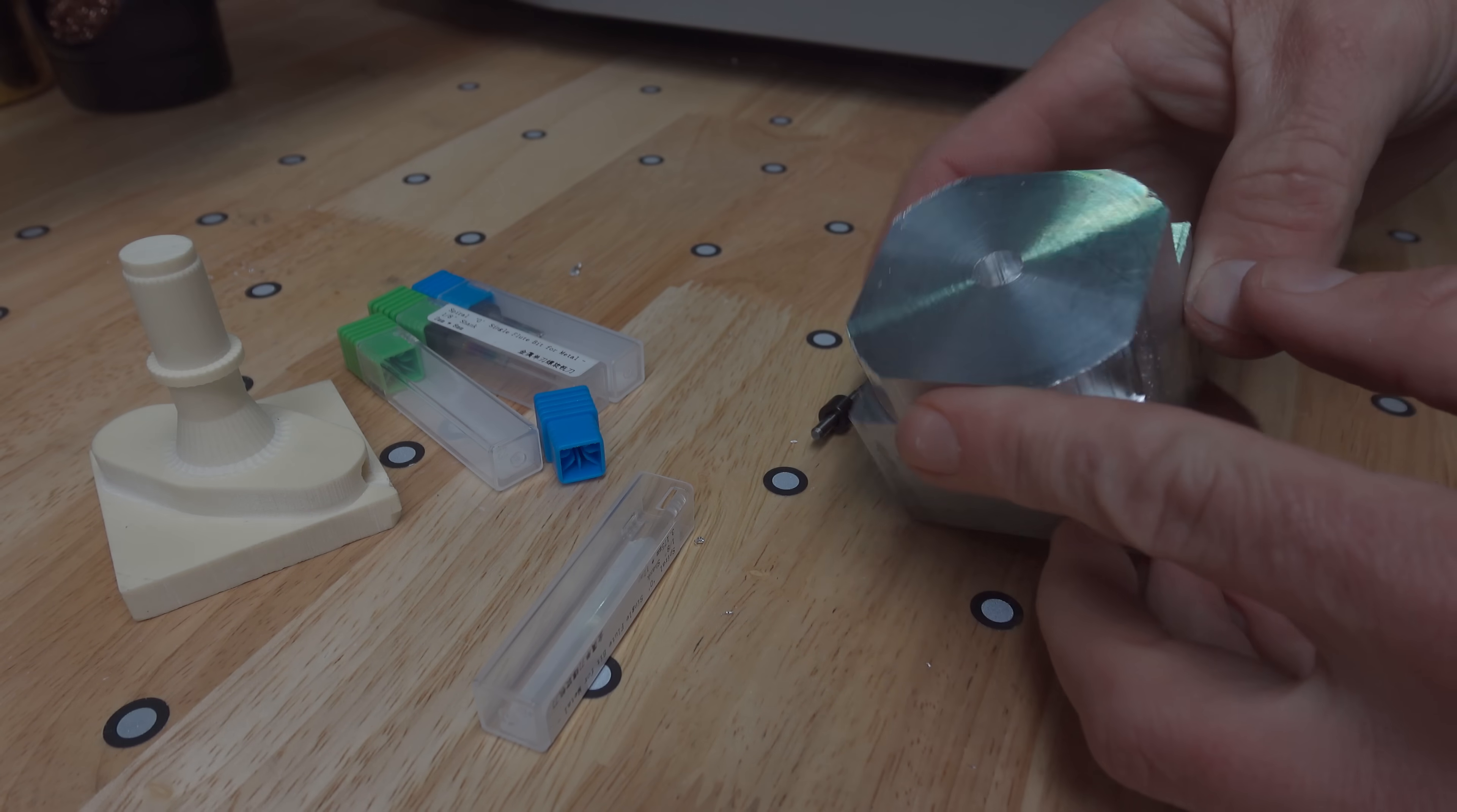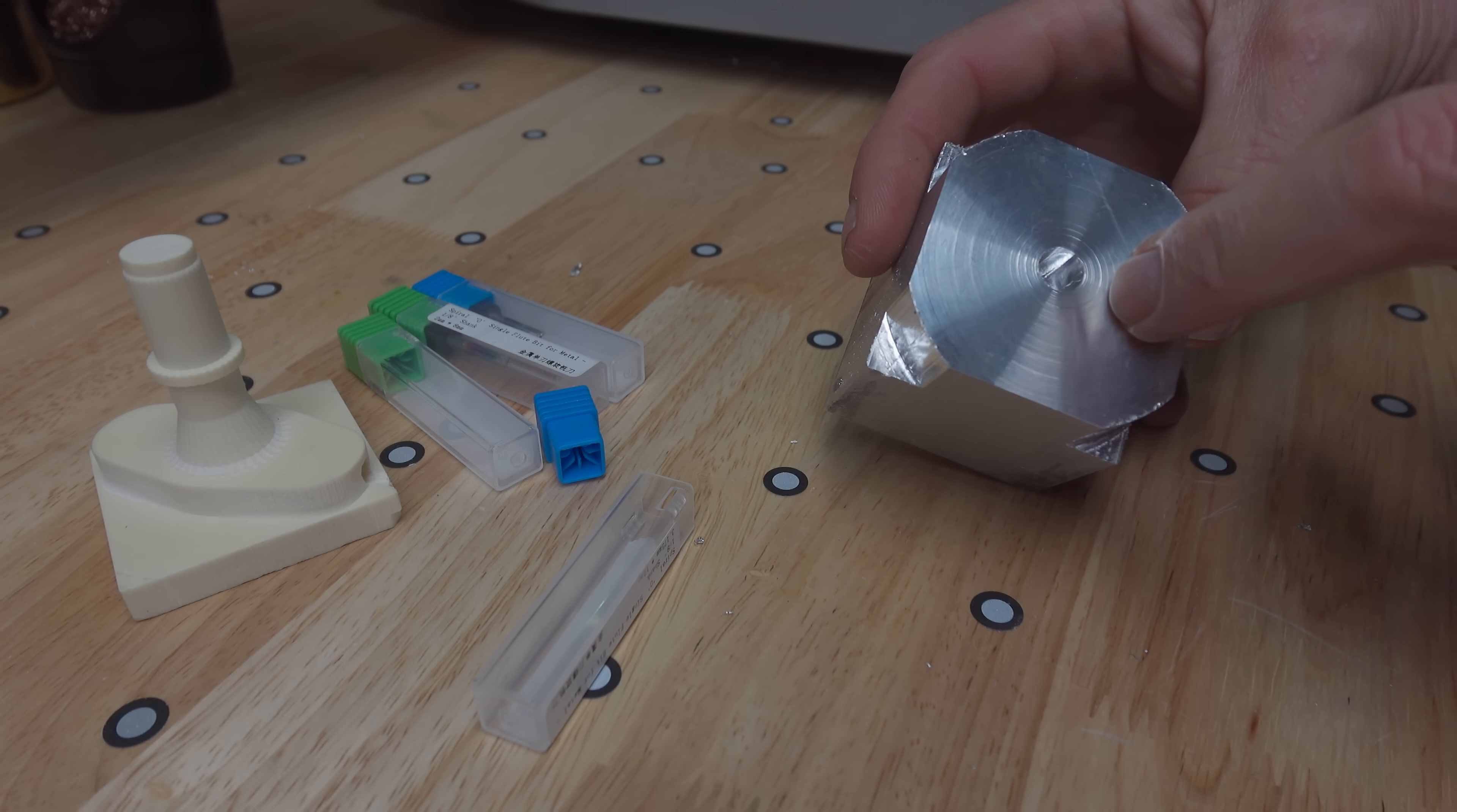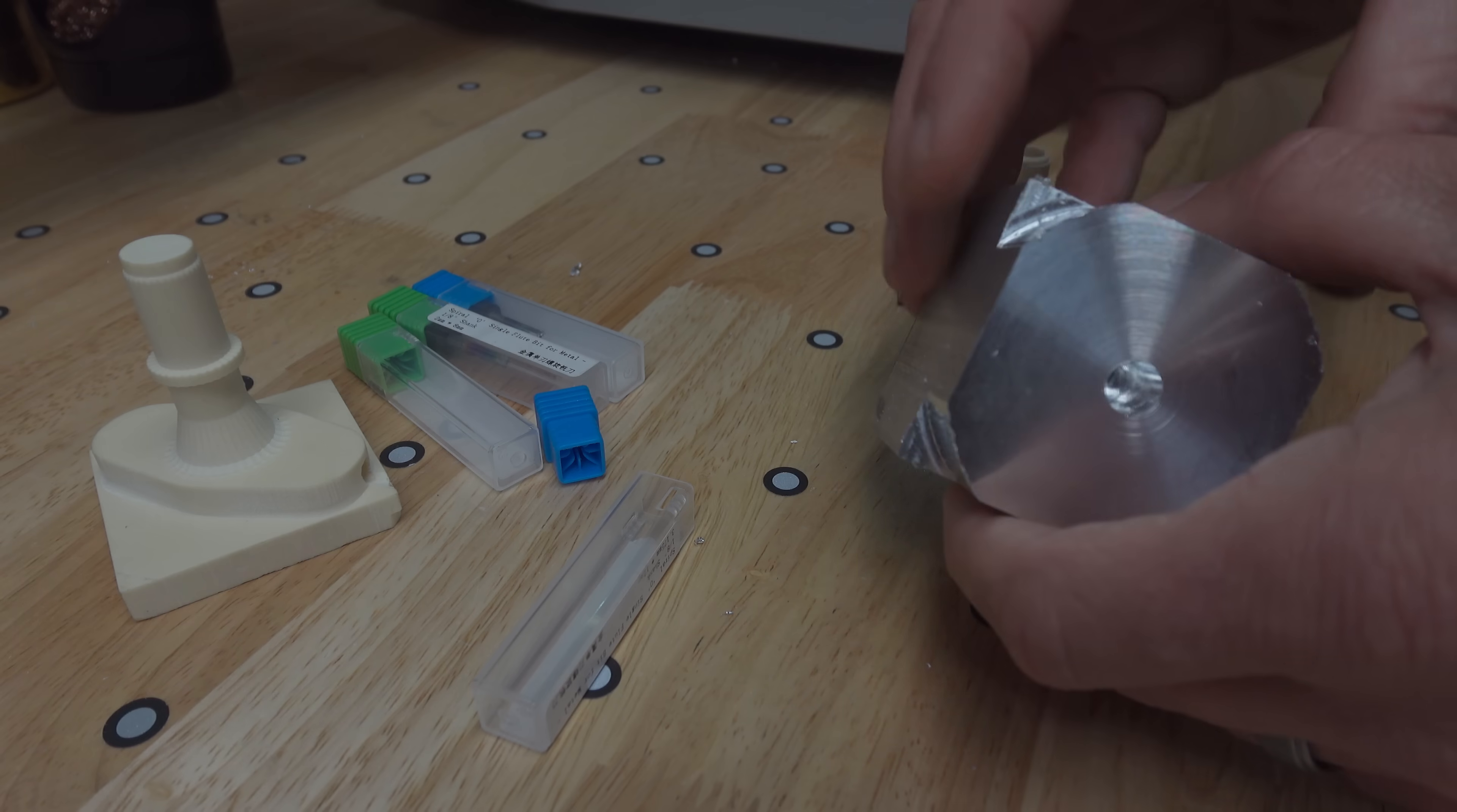All right, so our first operation is done. Basically, what we did here was create a pilot hole for the center, we were going to finish this with an eight and a half millimeter drill bit. It wasn't really going to be worth proving a point to try to machine from both sides concentrically on this machine.